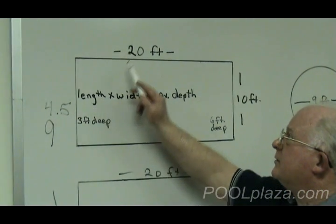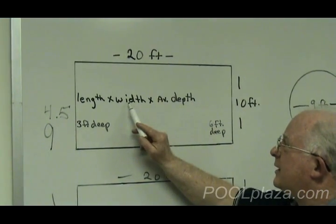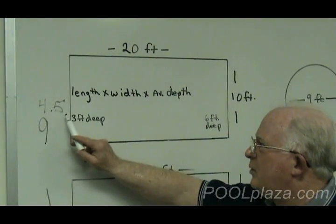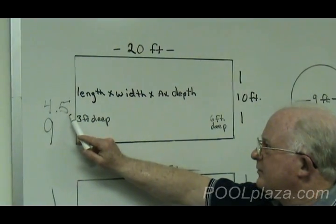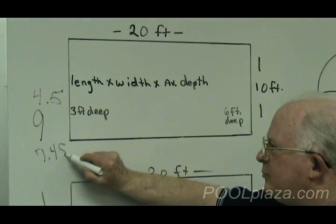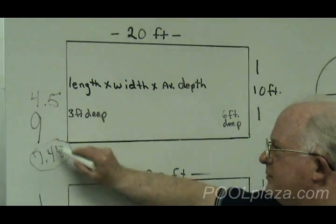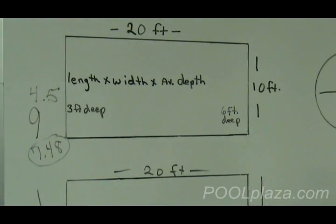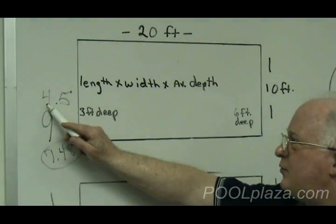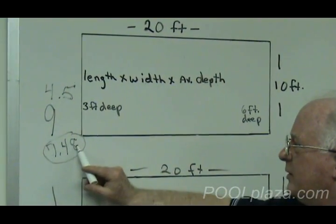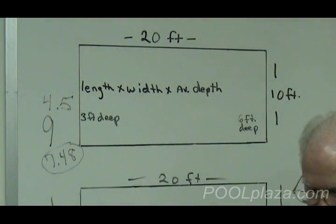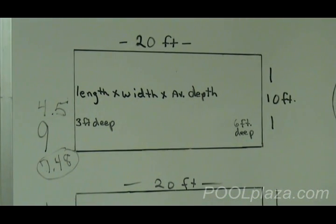Compute your numbers. Length, 20 feet, times width, 10 feet, times average depth, 4.5 feet, and the amount of water per cubic foot is 7.48 gallons per cubic foot. If you multiply 20 times 10 times 4.5 times 7.48, the amount of water in this pool is 6,732 gallons.